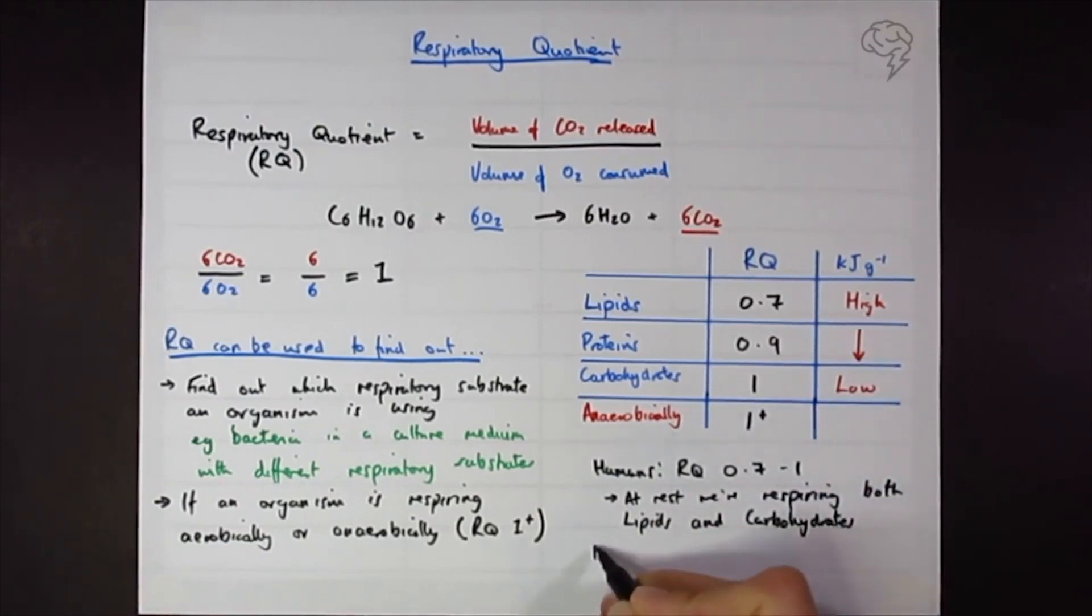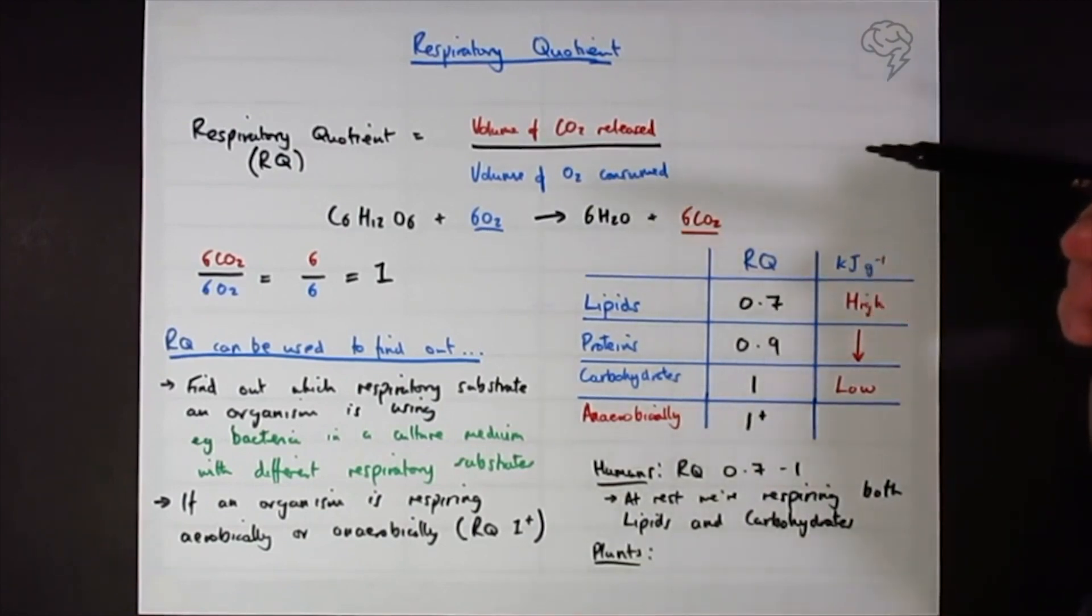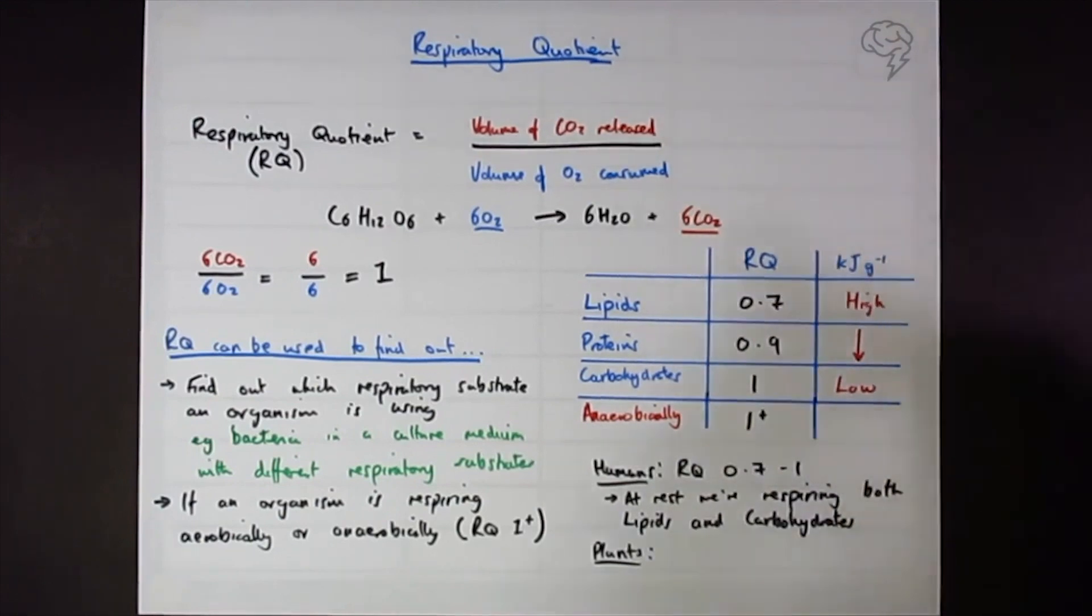Another point to note is about plants. Plants are going to sometimes have a low RQ because if we think about what they're doing in their other reaction, photosynthesis, they can use the carbon dioxide from respiration and they can use that in photosynthesis. So sometimes they don't release as much CO2 as they normally would.